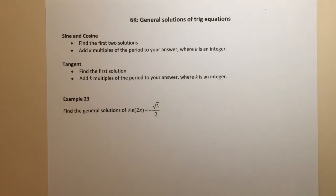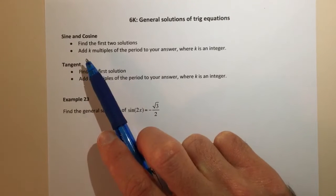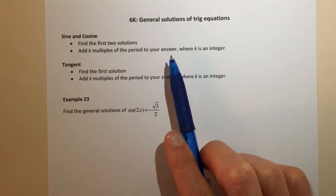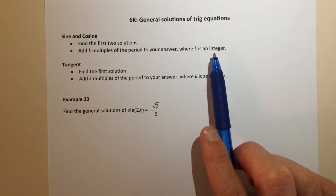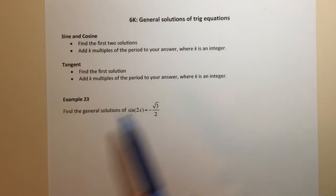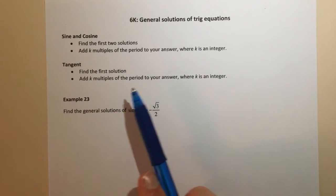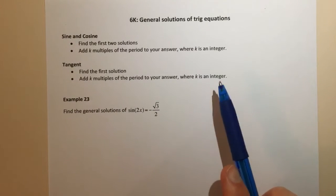For sine and cosine our steps are going to be to find the first two solutions and then to add k multiples of the period to your answer, where k is an integer. So remember integer can be any positive whole number, negative whole number, or zero. For tangent we actually only find the first solution and then add k multiples of the period to your answer where k is an integer.